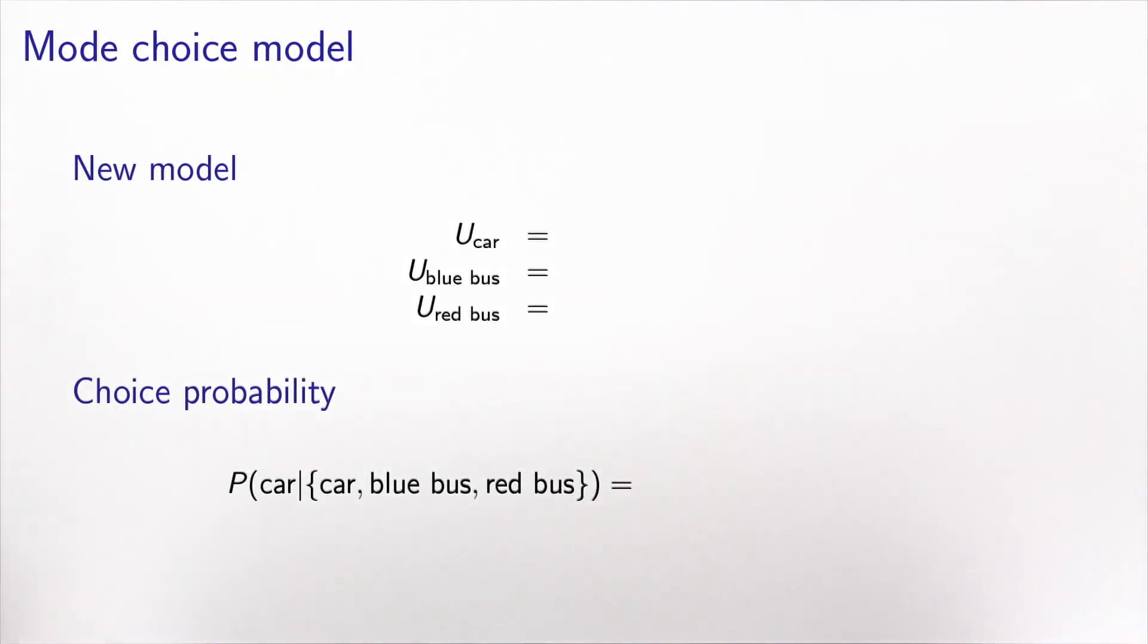Now the company has asked us to investigate the purchase of these red buses to complement the blue buses. Therefore, we write a model where we have three alternatives. Car, blue bus, and red bus. And we can write the utility function as we did for the previous model.